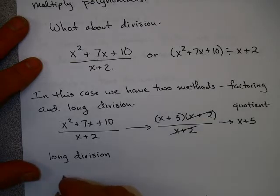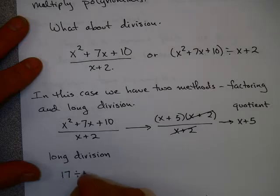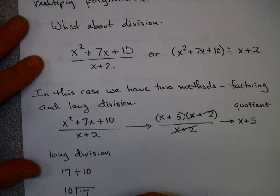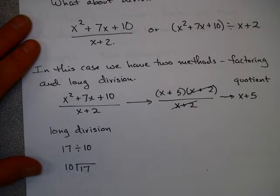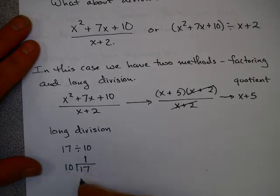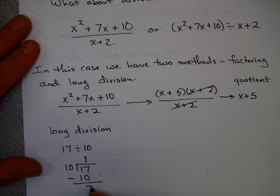And this goes back to maybe a problem you learned how to do back in third grade. If you wanted to do 17 divided by 10, you might have written this out. And then you would take 10, and you'd ask, how many times does 10 go into 17? You might say once. You'd multiply 1 times 10, get 10. Then you would subtract, right? And you'd have 7.